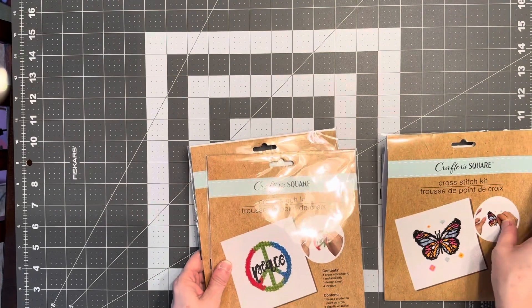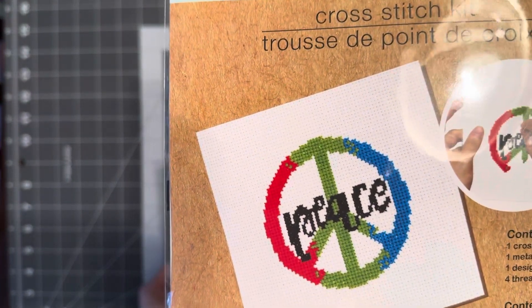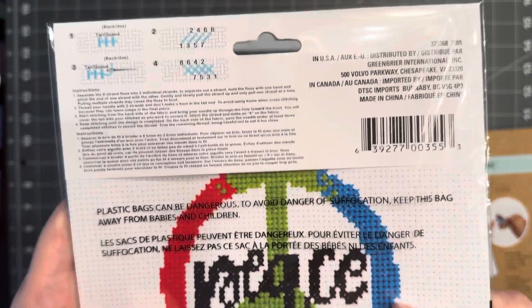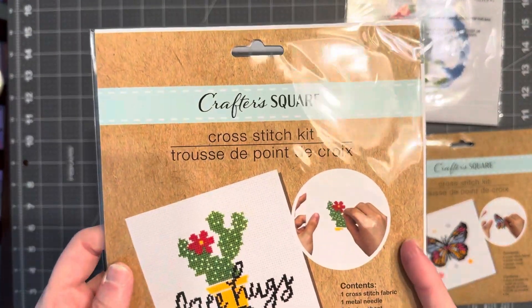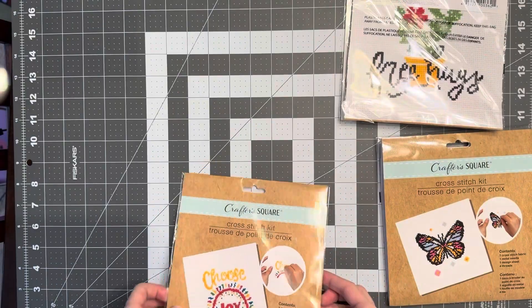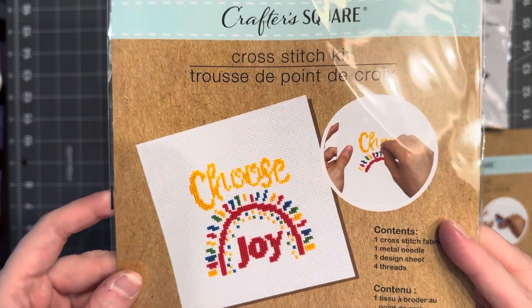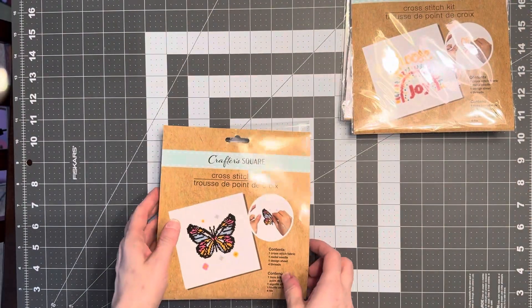And then I did buy some cross stitch kits. I bought this one that says peace, which is red, green, and blue. This cross stitch kit that says free hugs that's a cactus. And this one that says choose joy that's sort of like a rainbow. And then I got this butterfly.